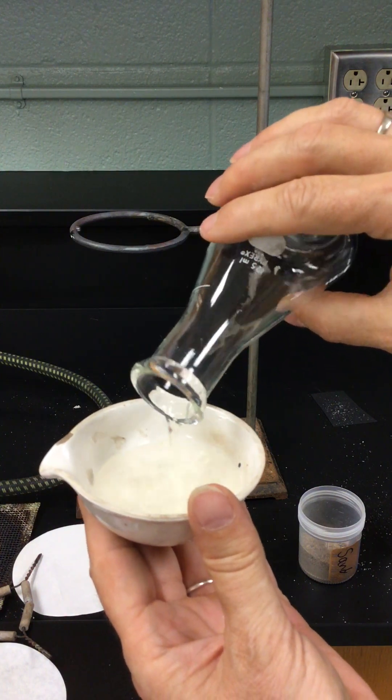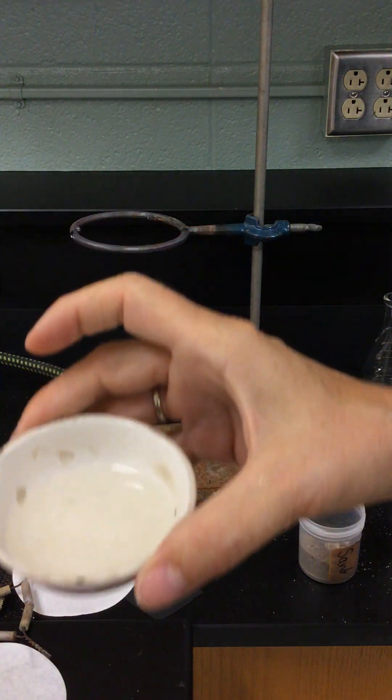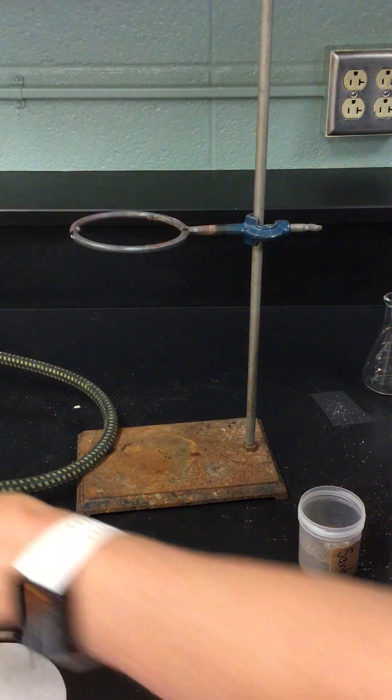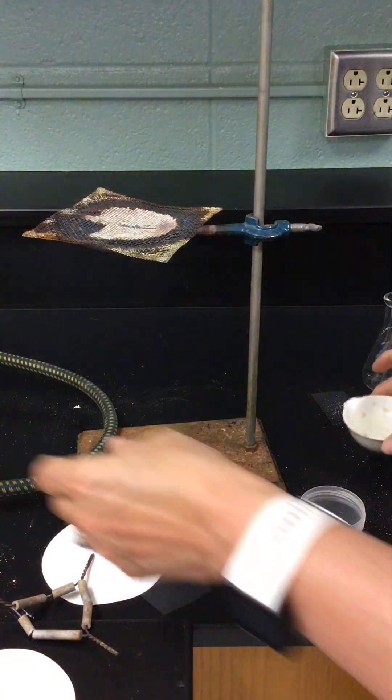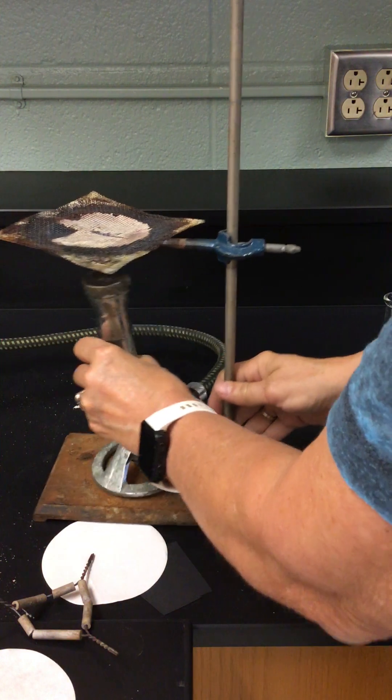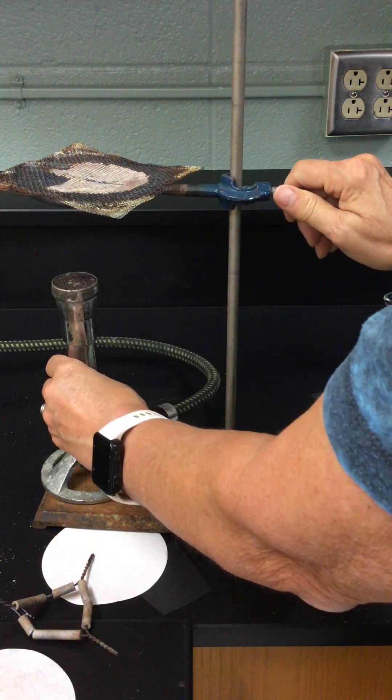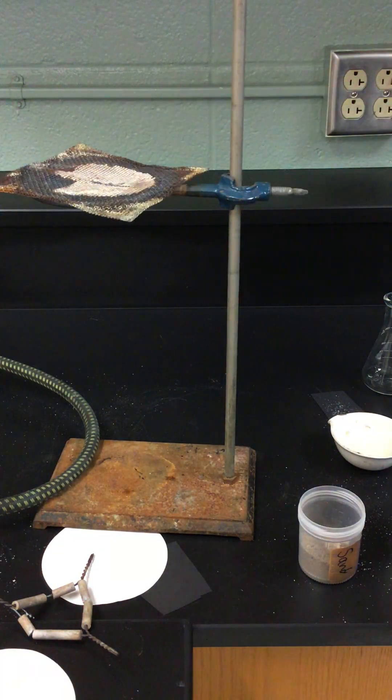We're going to put some of this filtrate into our evaporating dish. You can see if you can see what's in there, it looks just exactly like water. We're going to place this wire gauze. I got to make sure this is high enough. It is not, so I'm going to get this about so high. I'm going to put this on here.